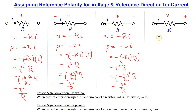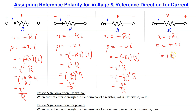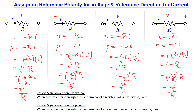In the fourth case, the conventional current is entering the terminal marked plus. Hence we use Ohm's law with a positive sign and the power formula with a positive sign: power equals plus V times I. Substituting the value of V gives plus R times I, multiplied by I, which equals I squared R. Substituting the value of I gives plus V over R, squared times R, which equals V squared over R.